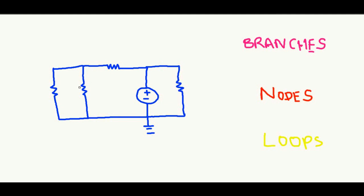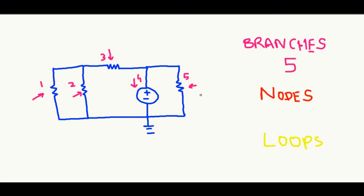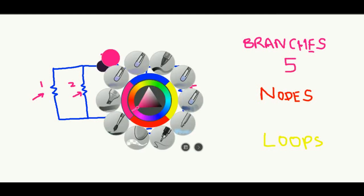Let's move on to the next problem. Suppose we have a circuit where we have a 1-ohm resistor, a 2-ohm resistor, a 5-ohm resistor, an independent current source of 10 volts, and a 4-ohm resistor. We don't need to consider the magnitudes — just count the elements. We have component one, two, three, four, and five — so all together five branches.